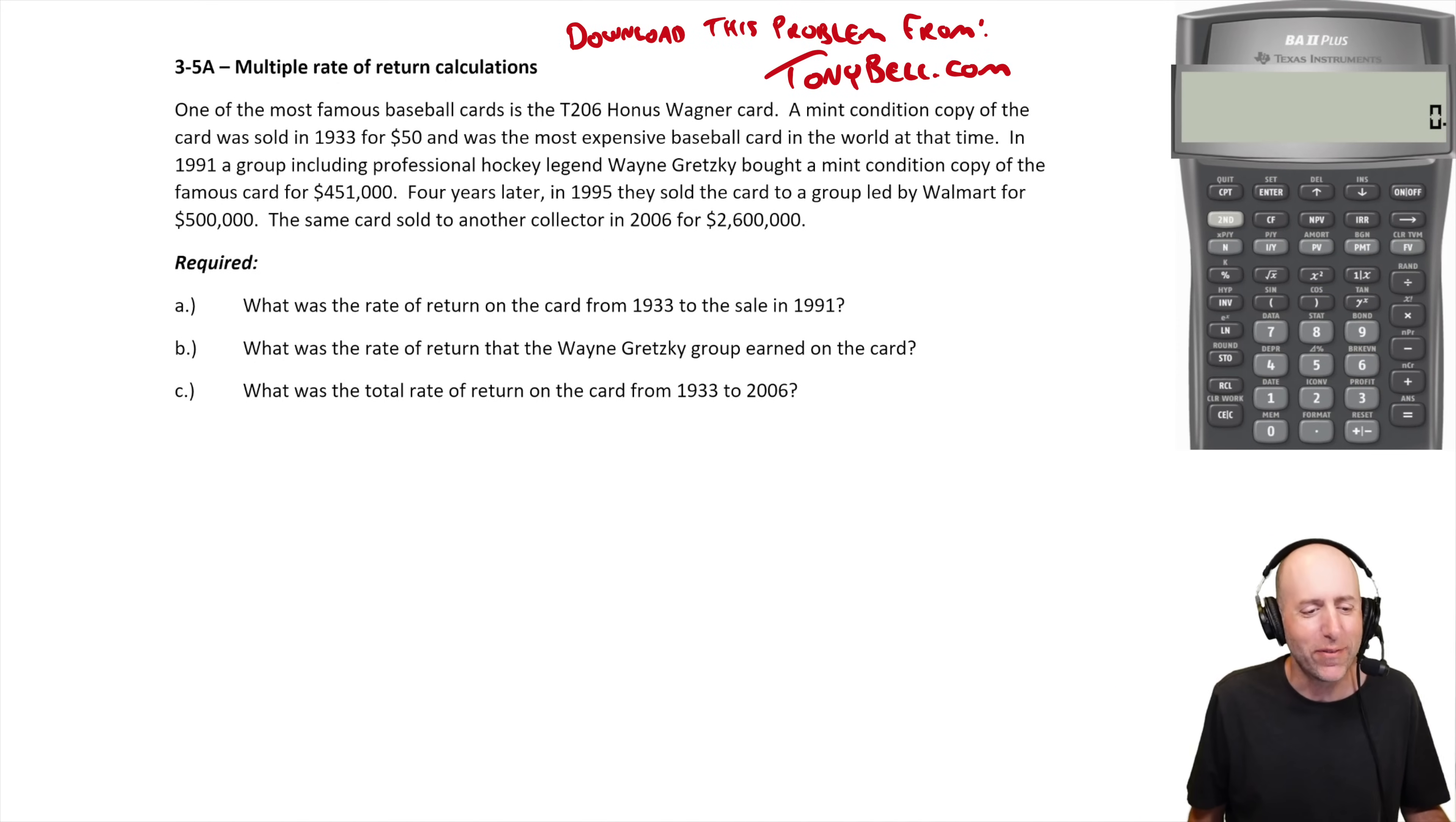Let's examine problem 3-5A, rates of return. We know the formula we've been using this whole chapter: present value times one plus the rate of return raised to the power of the number of periods equals the future value. We're doing lump sums here - one chunk of money in the present, one chunk in the future. In future questions we'll look at frequent cash flows and annuities.